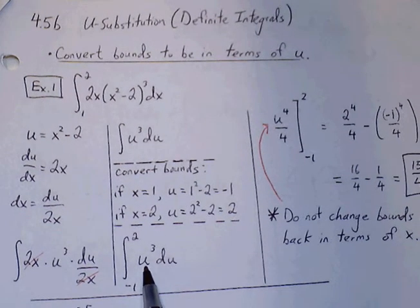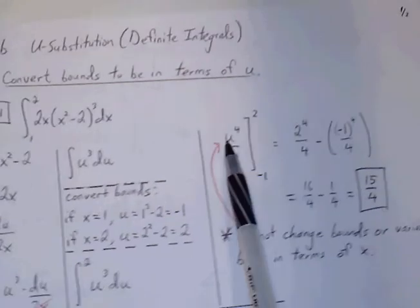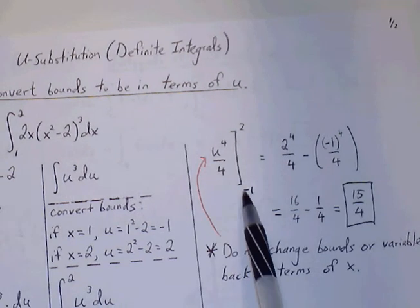So we go through power rule. So u cubed becomes u to the 4th over 4.